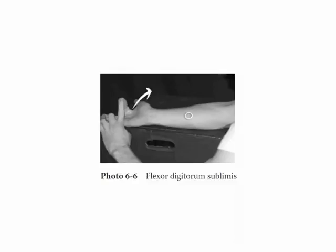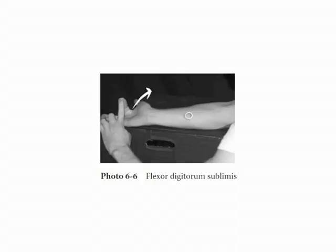Lastly, flex digits 2 through 5 at their proximal interphalangeal joints to demonstrate the role of flexor digitorum superficialis. Note, although the median nerve supplies only the 2nd and 3rd distal interphalangeal flexors, and the ulnar nerve supplies the 4th and 5th, the median nerve supplies all of the digits' proximal interphalangeal flexors.